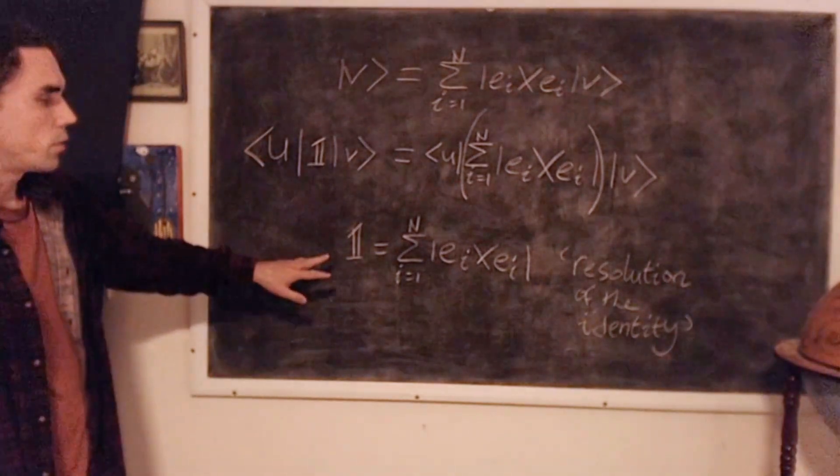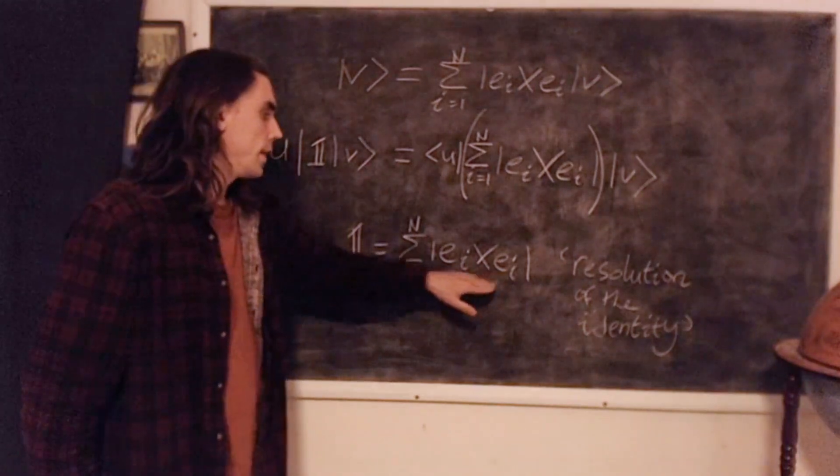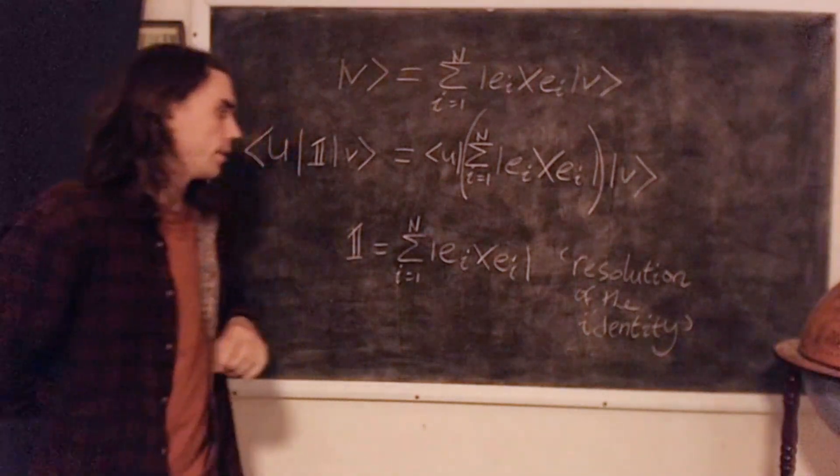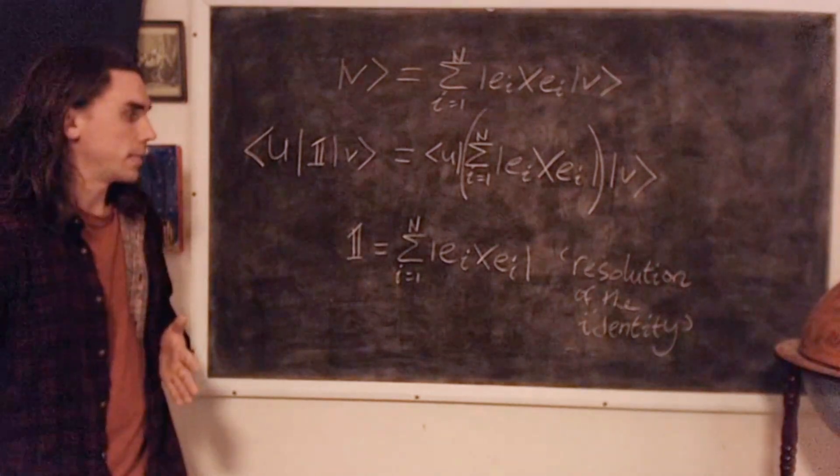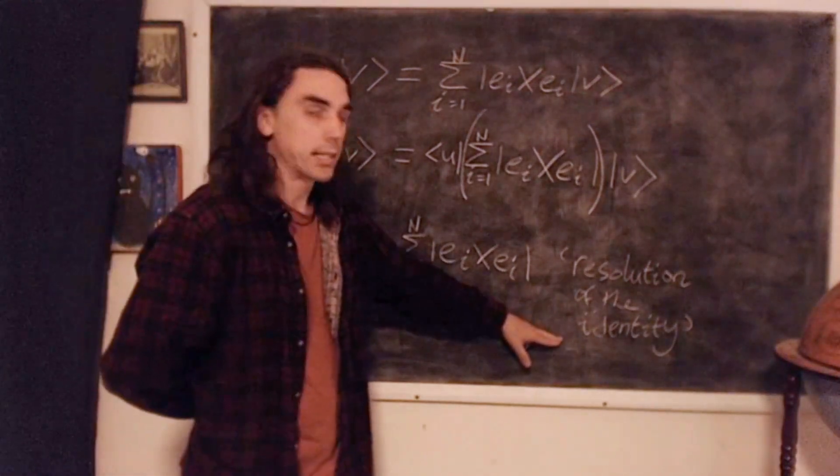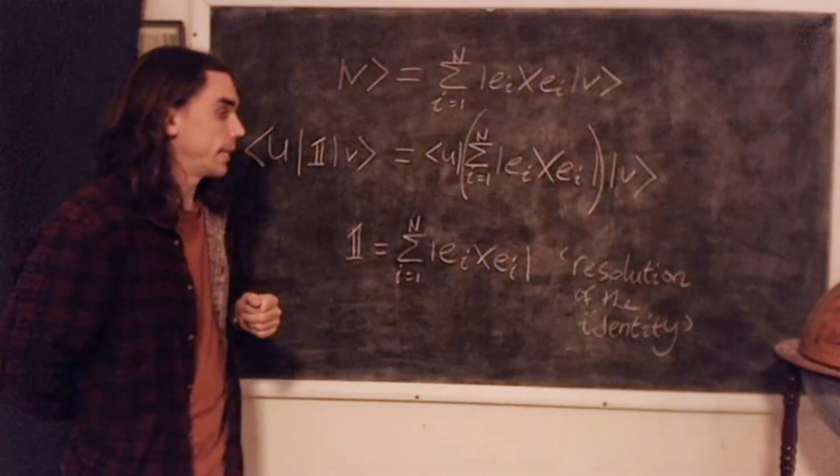And so therefore, from our theorem, we have the following result. The identity matrix is equal to the sum from i equals 1 to n, the outer product of EI, where EI are the basis vectors of a complete orthonormal basis. And this is called the resolution of the identity, and it's a very useful result. It's a simple result, but it turns out to be extremely useful in quantum mechanics. Let's just take a quick look at a very simple example.